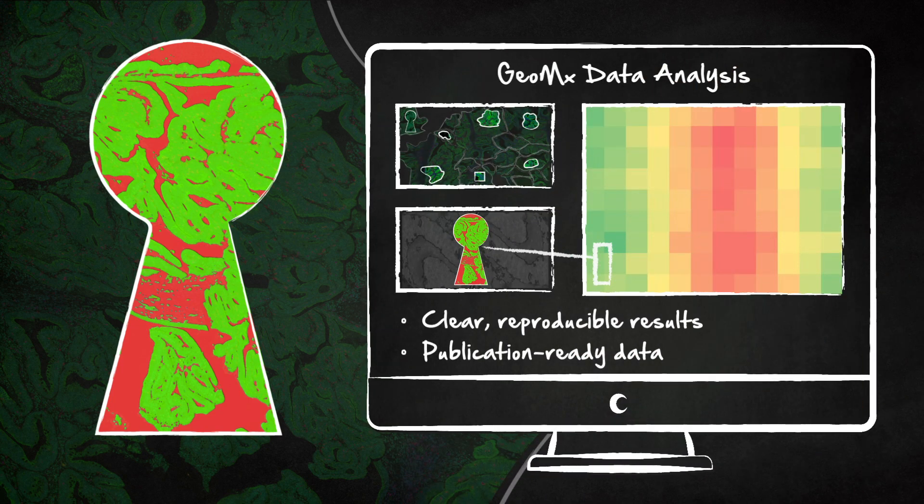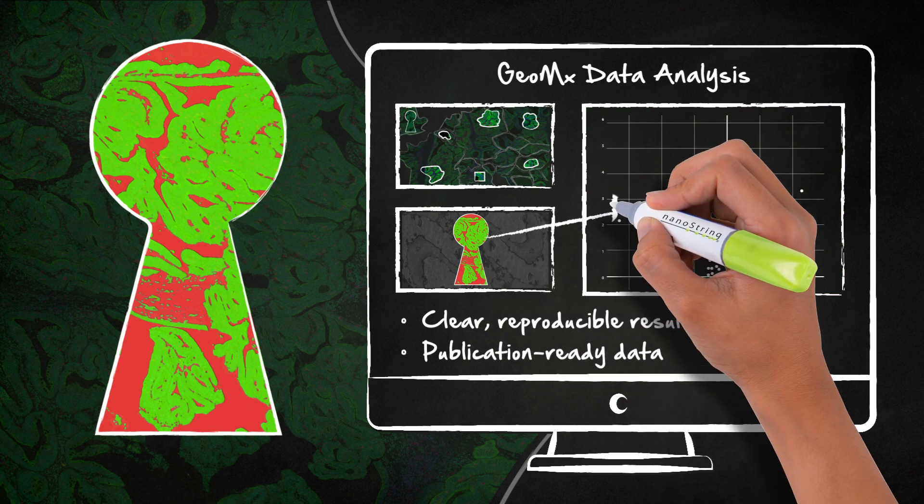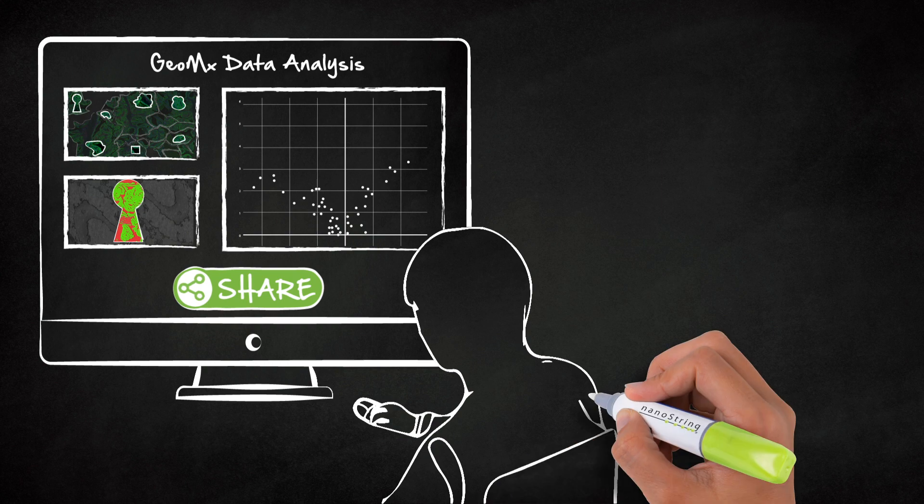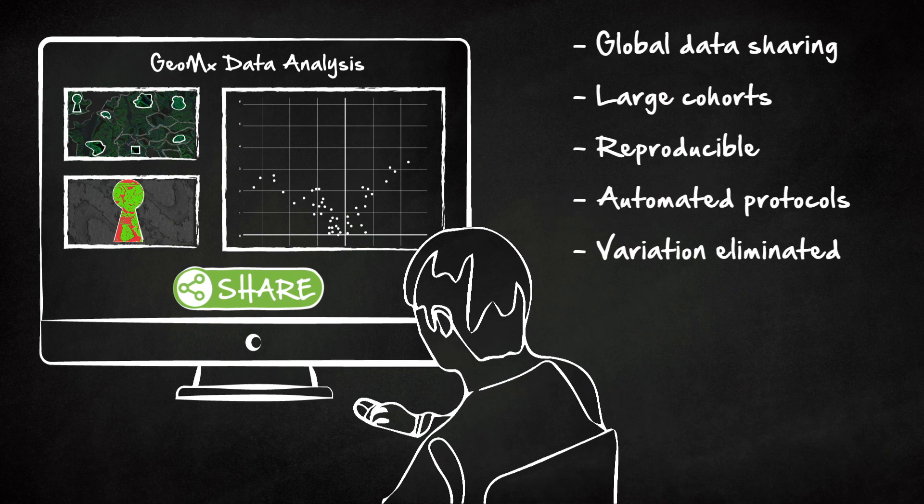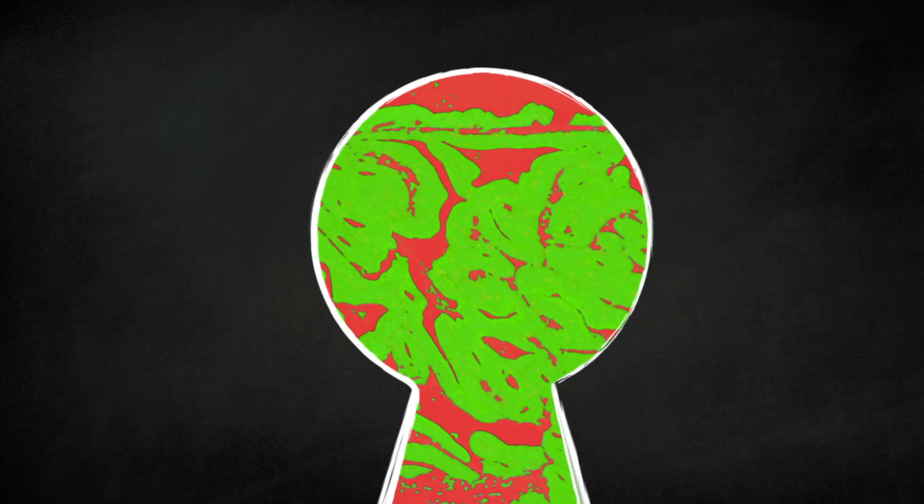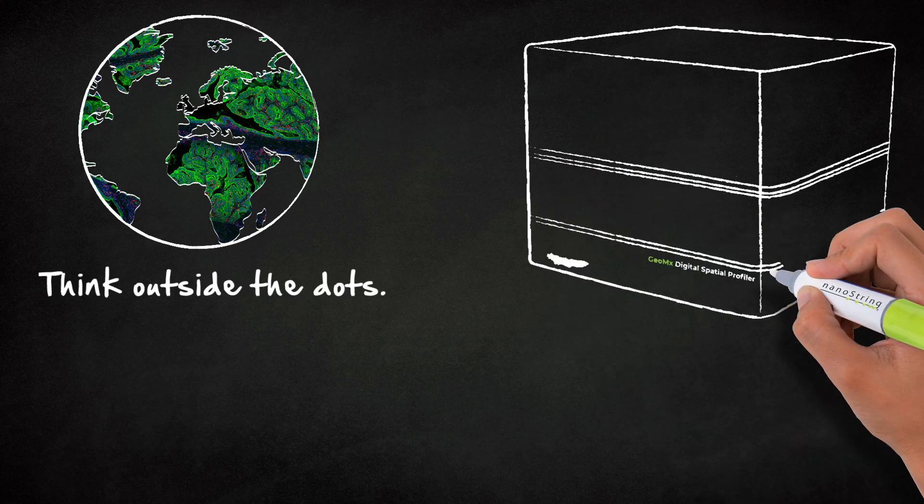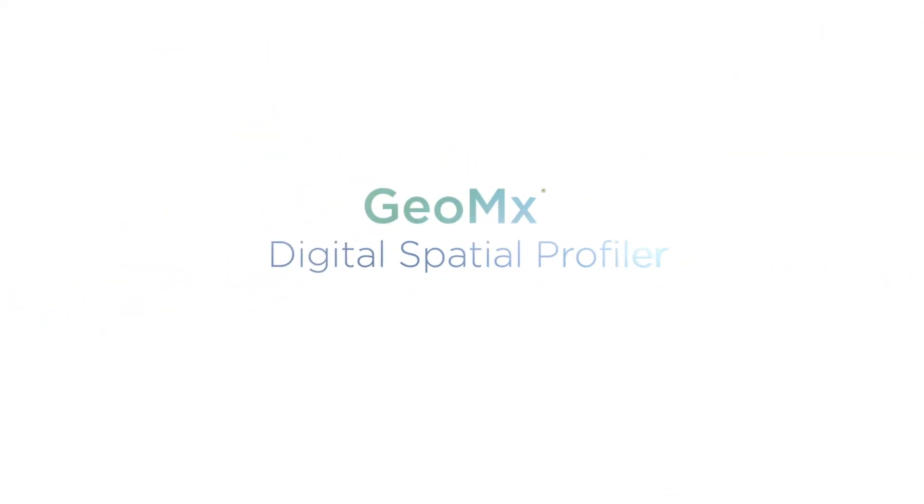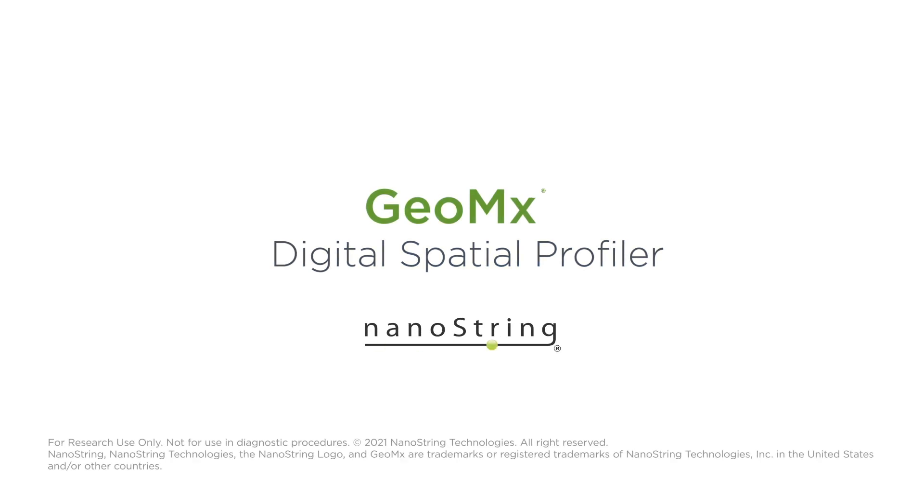you can connect your map with the data and chart your findings easily. Sharing your unique data is also easy, and others can build on your path or chart their own, even off the grid. Discover the biology that matters with the GeoMix Digital Spatial Profiler by NanoString.